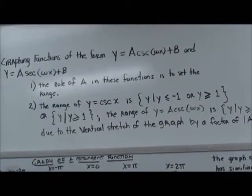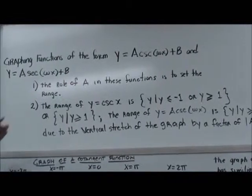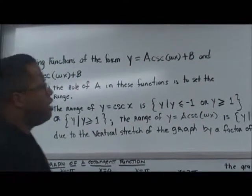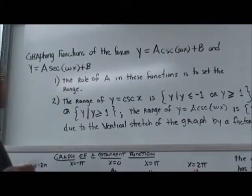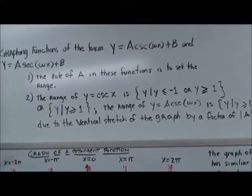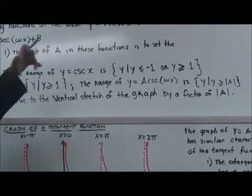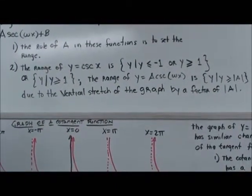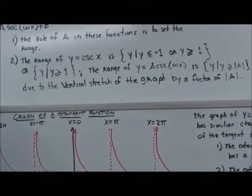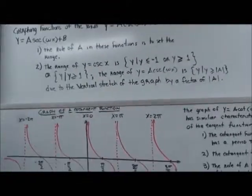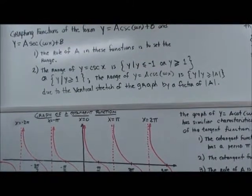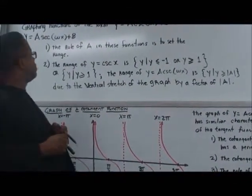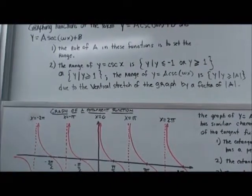We want to talk about its range, right? We talked about the graph a little bit, but we can talk a little bit more, but we're going to talk about the range. And basically, some points, some very important points. So, graphing functions of y of the form of y equals a cosecant omega x plus b, and also y equals a secant omega x plus b. The role of a, again, in these functions is to set the range, right? It's to set the range.